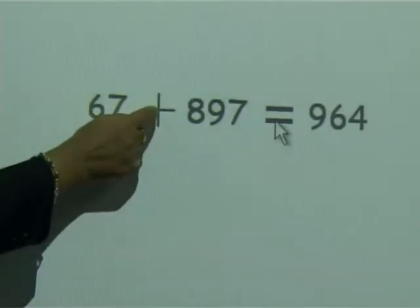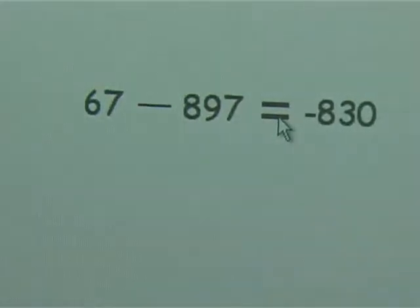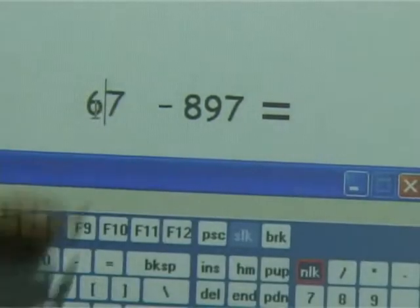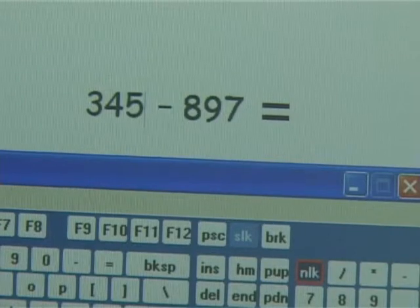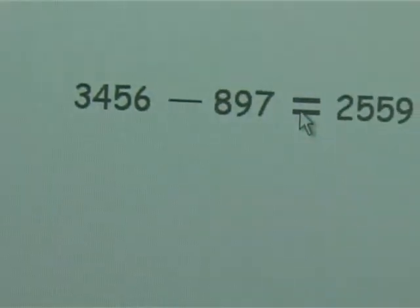If I want to change the operator into subtraction, I get the answer negative. If I want to change this into a bigger number and a positive answer.